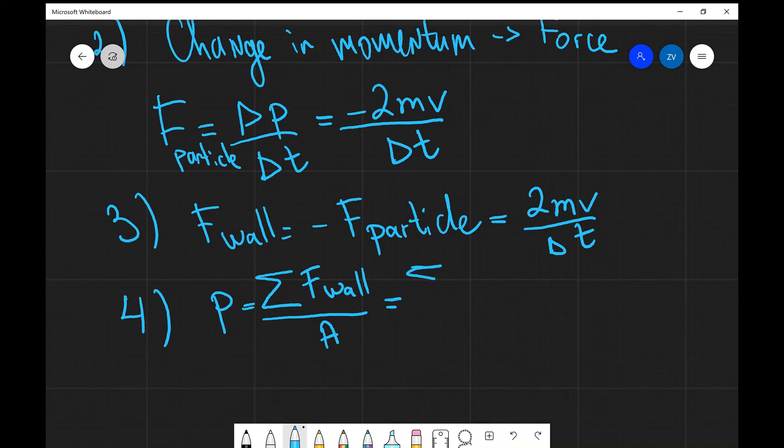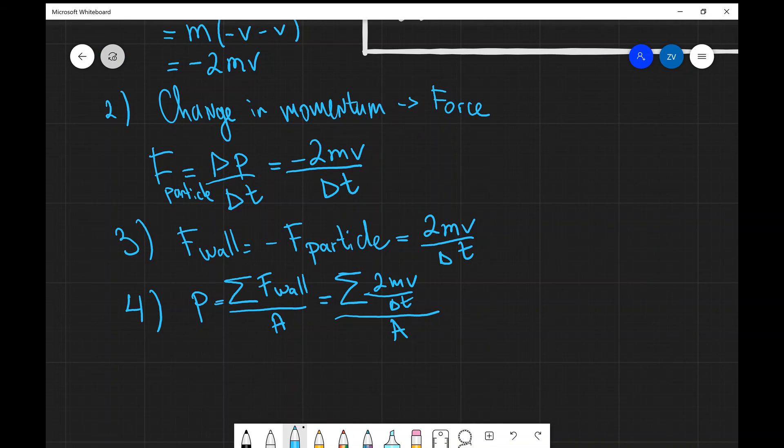Mathematically, this will be the sum of all the forces, 2mV over delta T, divided by all of those areas. And this is summing normally over the M index, assuming that they have typical speeds. Well, this is what pressure is fundamentally.